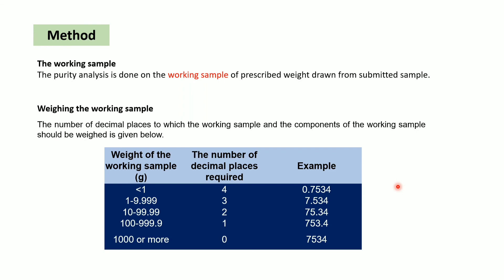For determination of huskless seeds - for example in sunflower or paddy - 400 seeds are taken from the pure seed component and the number of seeds without husk are counted. The number of huskless seeds is divided by 400 and multiplied by 100, which determines the percentage of huskless seeds.